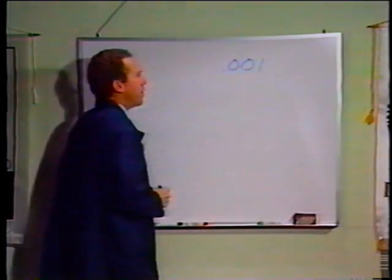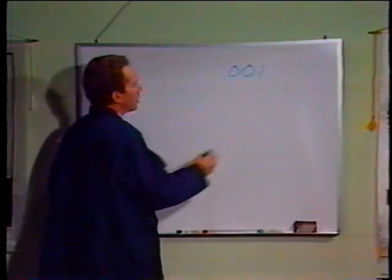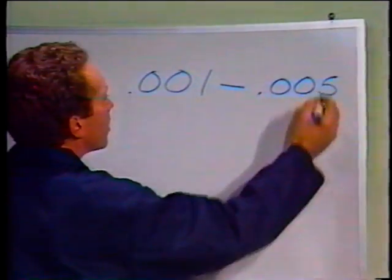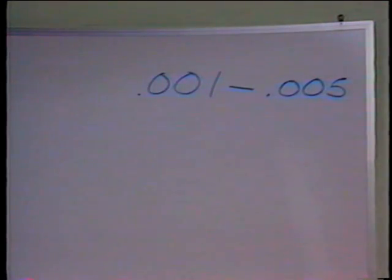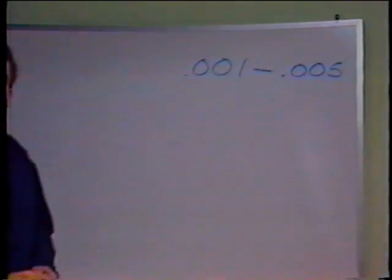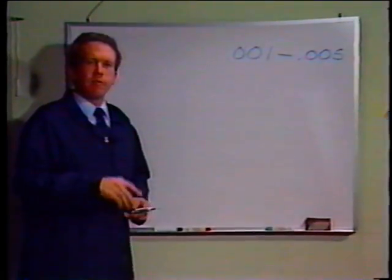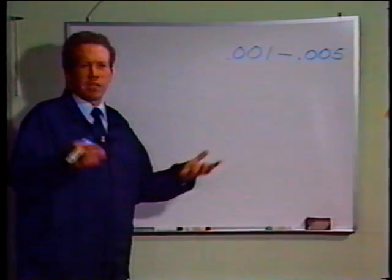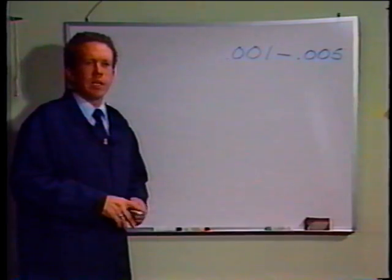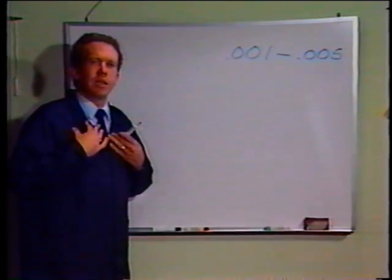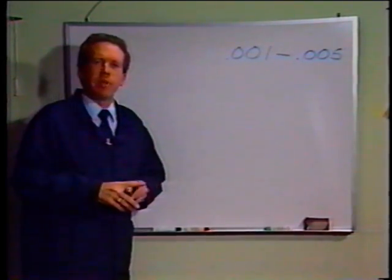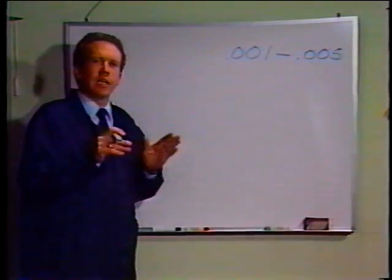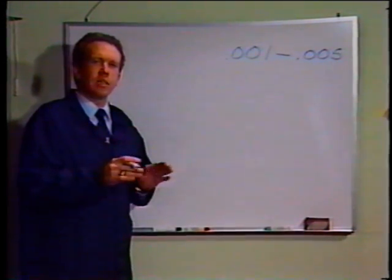For every one thousandth that you're off on your point setting, your timing is off five thousandths. As we set points, we all know that we have a different feel on the feeler gauge. Your setting may feel like 23 thousandths to you, 20 thousandths to me, or 17 thousandths to someone else. So it's important to get a consistent point setting and to time the engine.